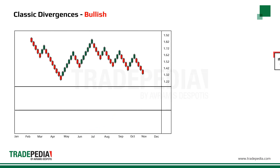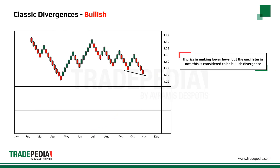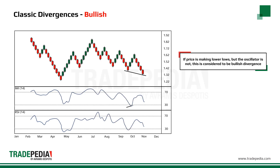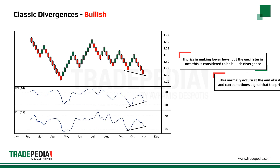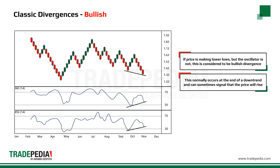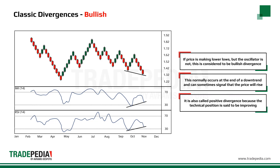Classic divergence: if price is making lower lows but the oscillator is not, this is considered to be bullish divergence. This normally occurs at the end of a downtrend and can sometimes signal that the price will rise, as price and momentum are normally expected to move in line with each other. It is also called positive divergence because even though the price is declining, it is declining at a slower and slower pace.